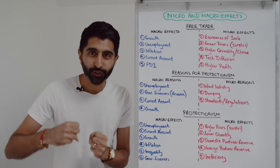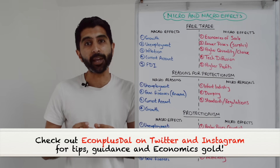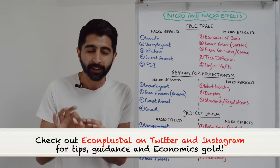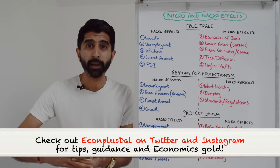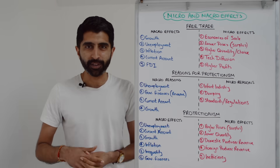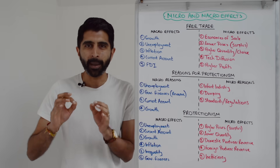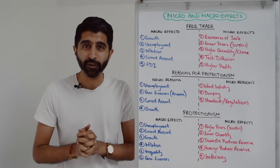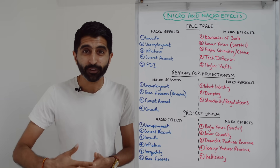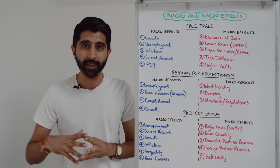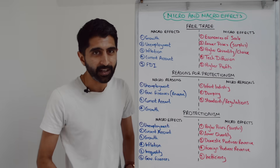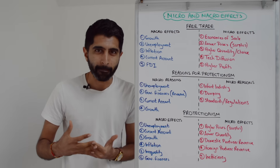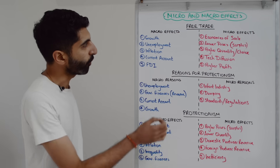Hi everybody. We know the topic area of trade and protectionism is a big one for Paper 3, so it's important that we're aware of the major micro effects, macro effects, but also the micro and macro reasons for protectionism. Make sure that you've watched a variety of my other micro and macro effects videos on the channel already, as it's important for all the major topic areas that can feature in Paper 3. Let's dive in, starting with the micro and macro effects of free trade. It makes sense to go to the macro effects first, seeing as that's where we learn it in the course.